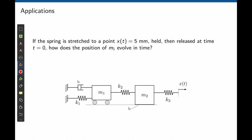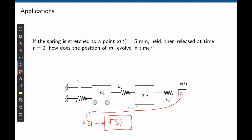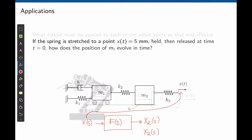If we have a transfer function, we can calculate how the position of mass m1 or m2 evolves in time when the mass is released from rest. The input to the system will be the position x(s), the Laplace transform of x(t), given to a transfer function H(s), and the output can be the displacement of m2, m1, or even the speed or acceleration of each mass.